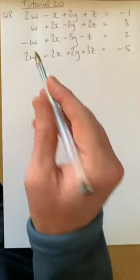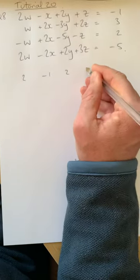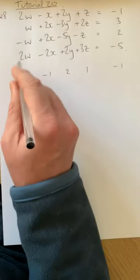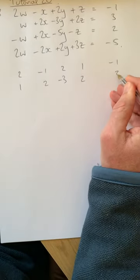So this would be 2, -1, 2, 1, and we'll get -1 at the end. Then 1, 2, -3, 2, and 3.